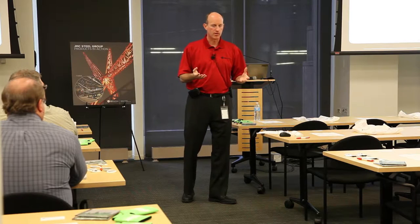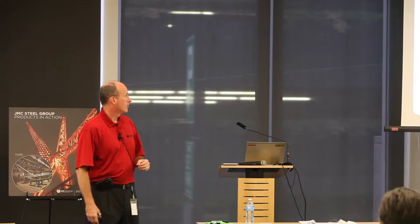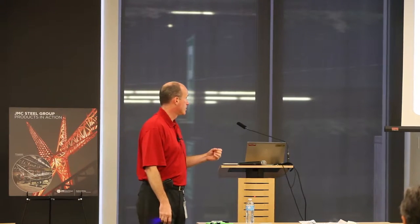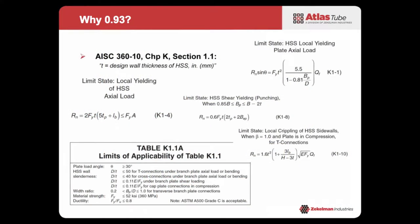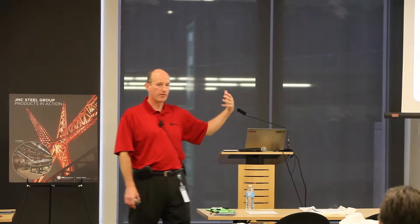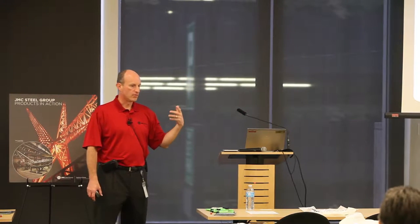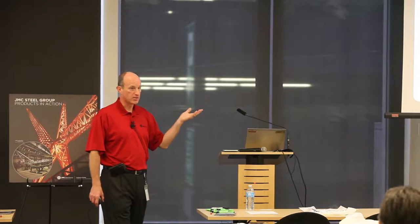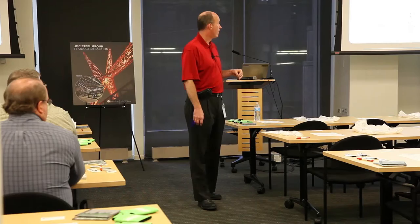So what does this have to do with connections? In Chapter K of AISC 360-1.1, T is explicitly defined as design wall thickness. If you're not using T_des — the reduced number — you're overestimating your connection capacity and being unconservative. If you're using an A500 product and designing connections, you must use T_des or ensure that the 0.93 factor is included.